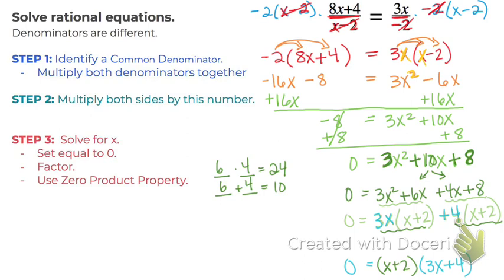So if that's all set equal to 0, we've now factored. Our very last step is to use the zero product property. So we need to remember that when we multiply numbers together, like this times this, and the answer is 0,